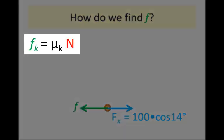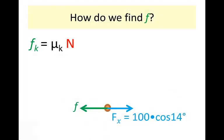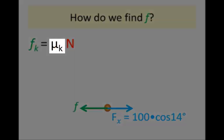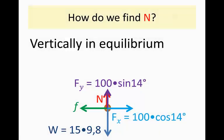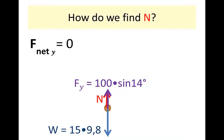To find friction, we use the formula: friction equals the coefficient of friction multiplied by the normal force. Since the object is moving, it is kinetic friction we need, using the coefficient of kinetic friction. We are given that coefficient, but we still need the normal force. Normal force is vertical, so we must focus on the vertical forces. We know the block is not accelerating vertically — it is not moving up or down.